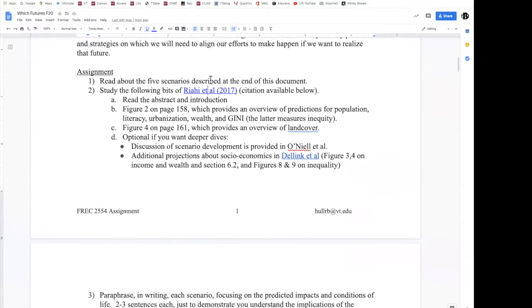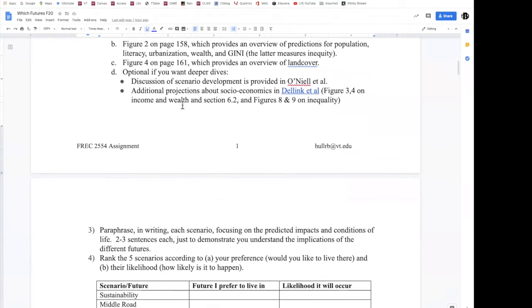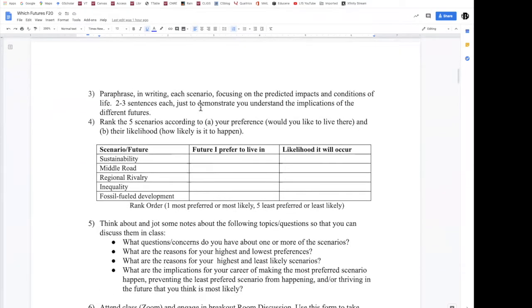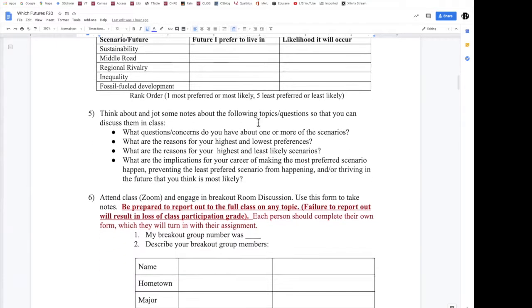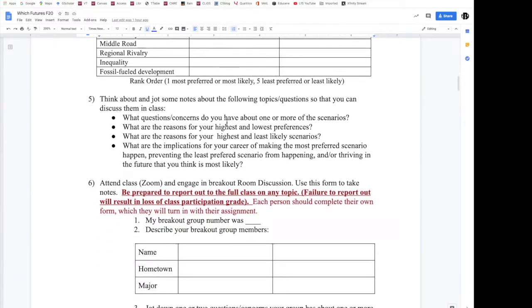So then back to the assignment, I'm asking you to define those different scenarios, say which ones you prefer, rank order them in preference, rank order them in terms of the likelihood and the likelihood and the preference might not be the same. As you're doing that, generate some questions.